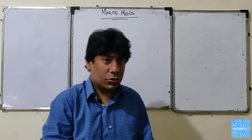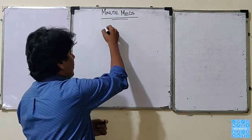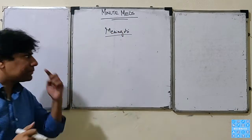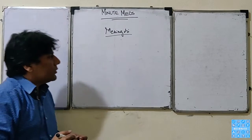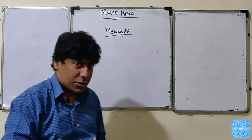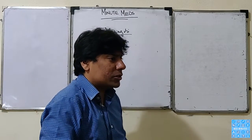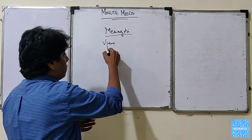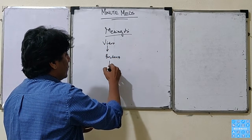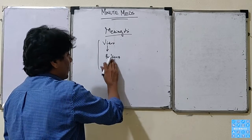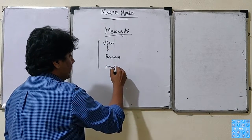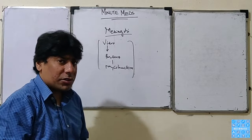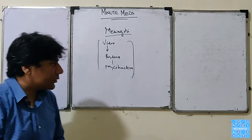Welcome to Med Meds. Now we are going to study meningitis. It's a common CNS infection — it means there is inflammation of the meninges. The causative organisms range from viruses and bacteria to mycobacteria. The presentation remains the same but there is difference in the severity of the condition.